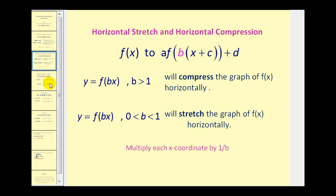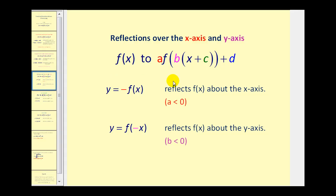Before we talk about c and d, we need to back up and talk about what happens when we change the sign of a and b. When a is equal to negative 1, y equals negative f of x will reflect f of x about the x-axis. Remember f of x is equal to y, so here we would be changing the sign of the y-coordinates and therefore reflecting the graph across the x-axis. If b is equal to negative 1, where y equals f of negative x, this reflects the original function f of x about the y-axis because we're changing the sign of the x-coordinates, or the inputs.